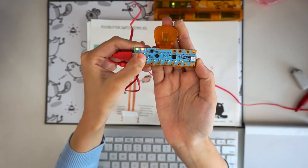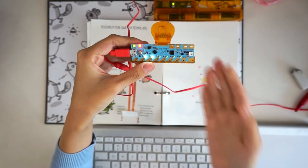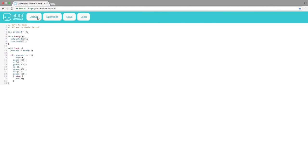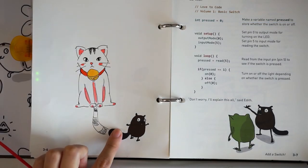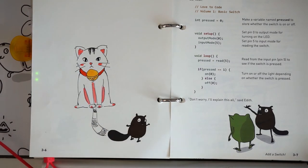Once you're done making the changes, press and hold the prog button until the light turns red and upload your new code. Attach your Chibi chip to the page and press Edith's tail again. Now the cat's bell blinks when the switch is pressed.